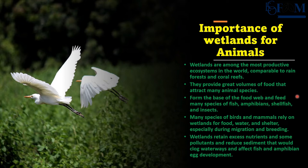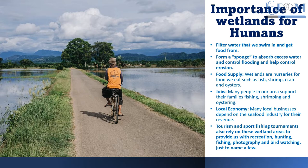Wetlands retain excess nutrients, some pollutants, and reduce sediment that would block waterways and affect fish and amphibian egg development. From the perspective of humans, wetlands filter the water that we swim in and get food from — various reservoirs and streams from which water comes are filtered by wetlands.